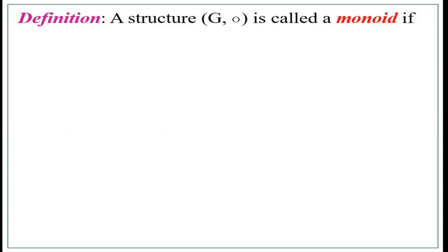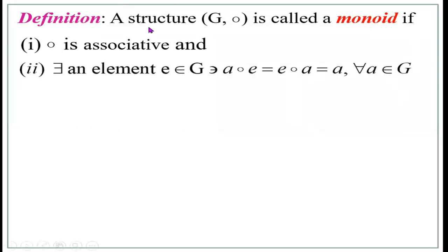A monoid should satisfy three conditions. A groupoid satisfies closure only; a semi-group satisfies closure and associativity. A monoid must satisfy three conditions: closure, associativity, and existence of identity — that is, there exists an element E belonging to G such that A circle E equals E circle A equals A, for all A belonging to G.